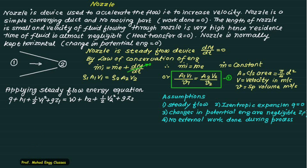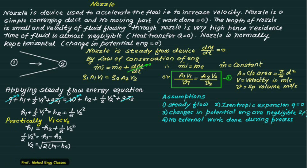Applying these assumptions, Q vanishes, W equals zero, and z1 equals z2 cancels, leaving us with: h1 plus half·V1² equals h2 plus half·V2². In practice, the exit velocity is around 1000 m/s while inlet velocity is only about 30 m/s. Squaring these makes the inlet kinetic energy negligible, so V1 is much less than V2, and we get h1 equals h2 plus half·V2², giving us V2 equals the square root of 2(h1 minus h2).